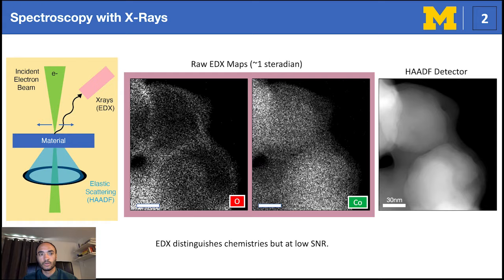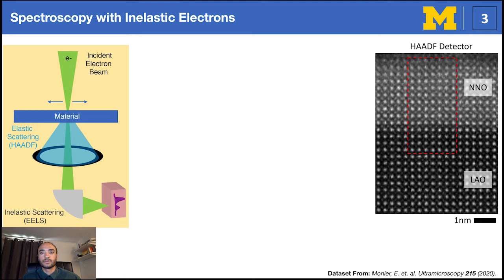electron energy loss spectroscopy, or EELS for short, consists of transmitted electrons whose signature probes material's local chemical and electronic structure. Unlike EDX, which measures photon emissions, EELS measures the energy loss from transmitted electrons that forward scattered off the atoms in the specimen.